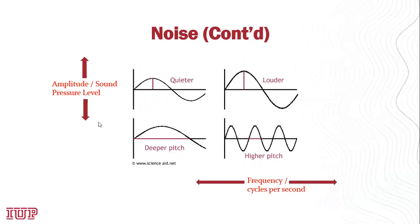This graphic shows how noise and frequency appear based on a waveform. The top two images show different amplitudes. The one on the left shows a shorter amplitude — a shorter height of the wave — which would be quieter. The image on the top right shows a louder noise with a larger amplitude extending higher above the line. The bottom two images show pitch or frequency. On the left you have a deeper pitch and a longer wavelength, and on the right a shorter wavelength equating to a higher pitch and higher frequency.